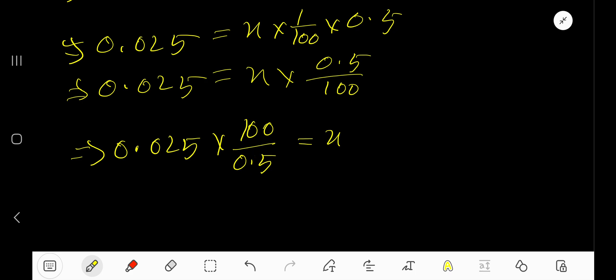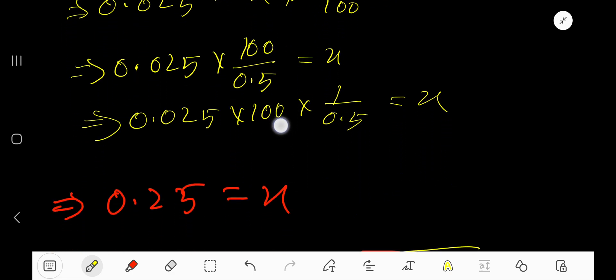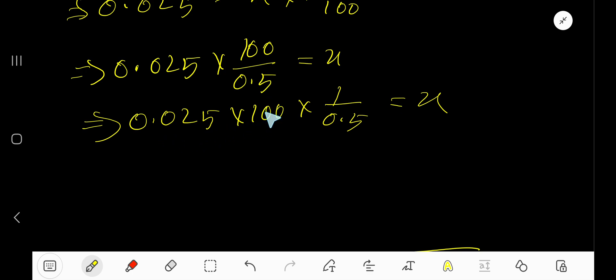Now we need to solve this problem. 0.025 times 100 times 1 over 0.5, we can rewrite this. Now multiply this decimal by 100. Look, 10 to the power 1 means 10, 10 to the power 2 means 100. These are powers of 10.